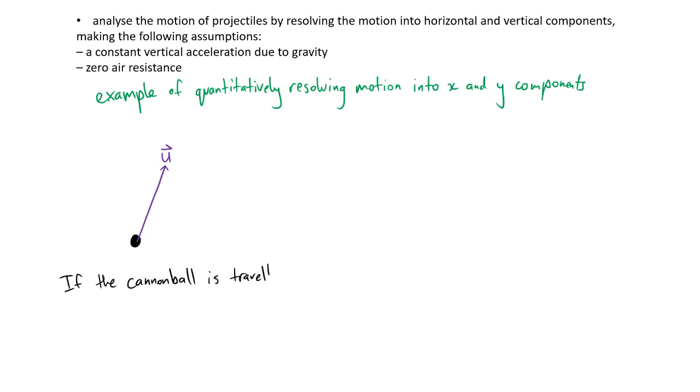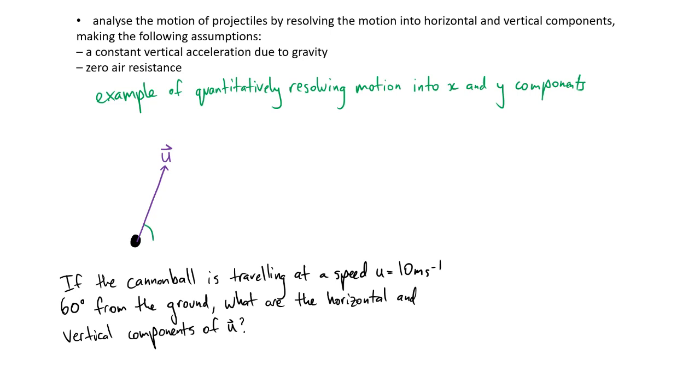Say that this is equal to 10 meters per second. We're saying it's 60 degrees from the horizontal. What is the horizontal and vertical components of the velocity U? We know that in the horizontal direction we have Ux. In the vertical direction we have Uy. What we can do is draw this up as a triangle, where this is 60 degrees. This is our U, this is our Uy, and this is our Ux. This is just a simple trigonometry problem effectively.